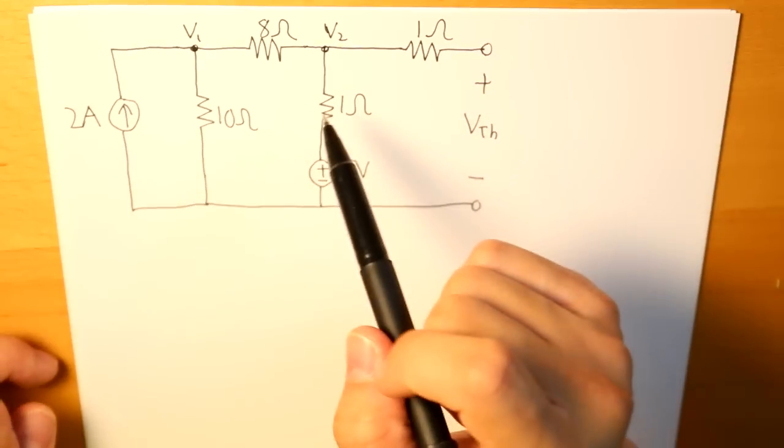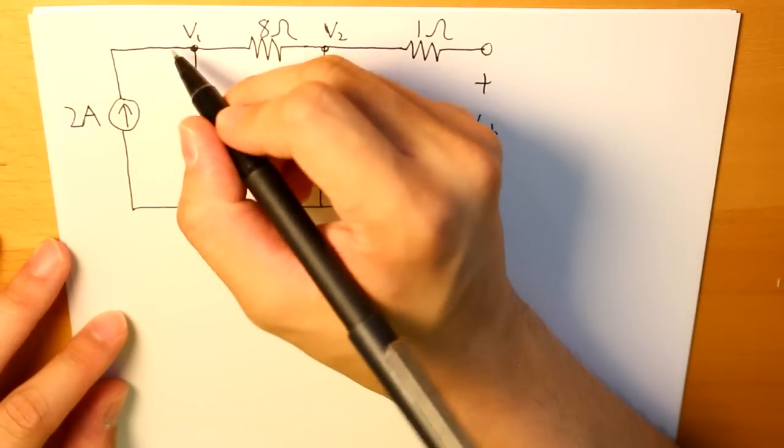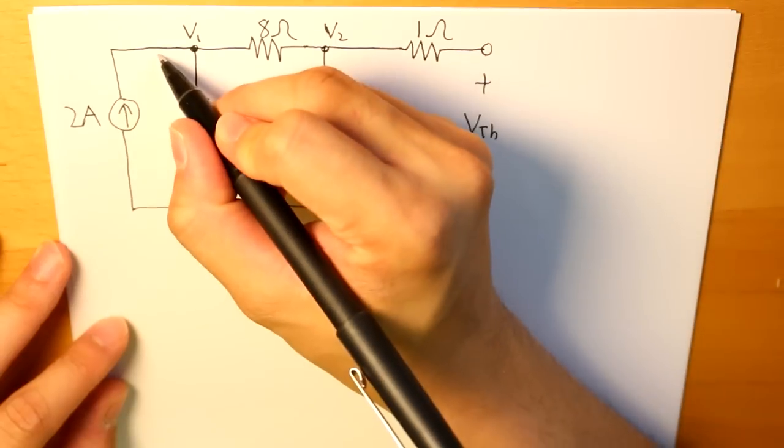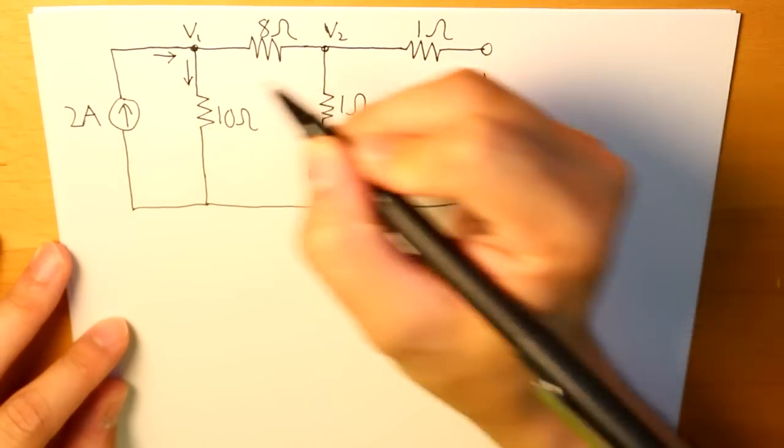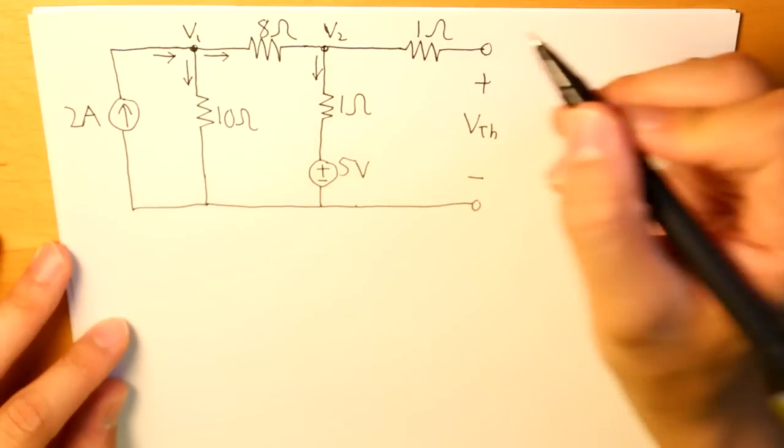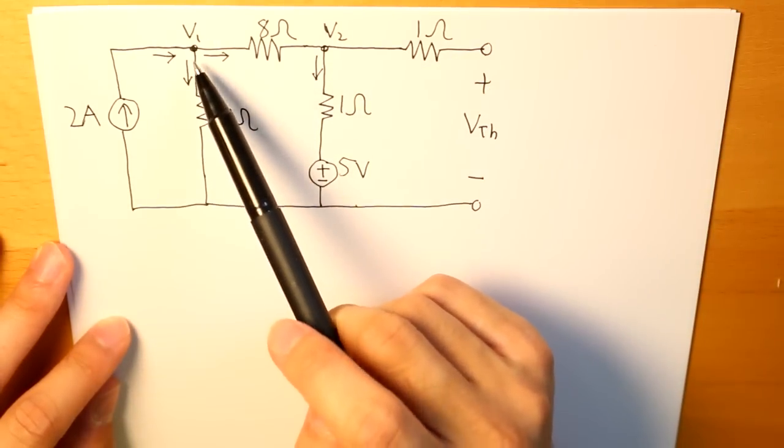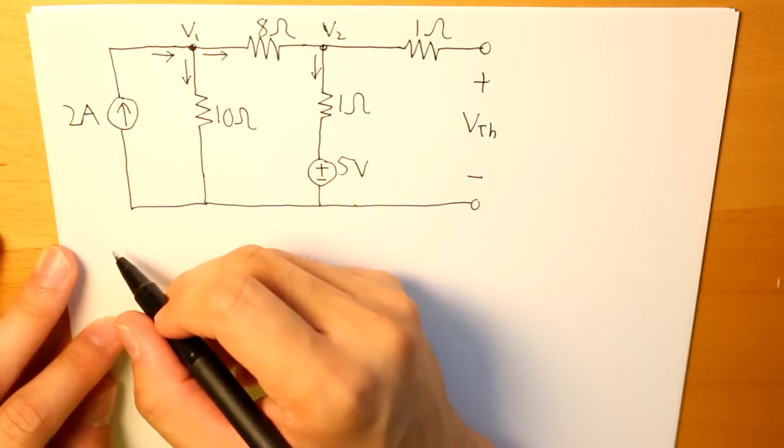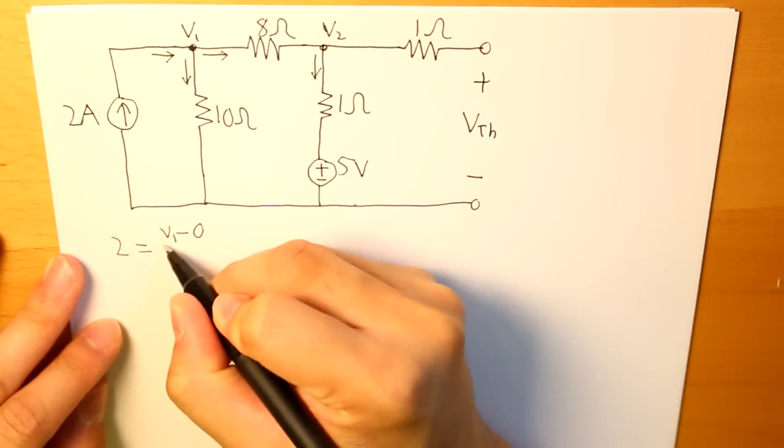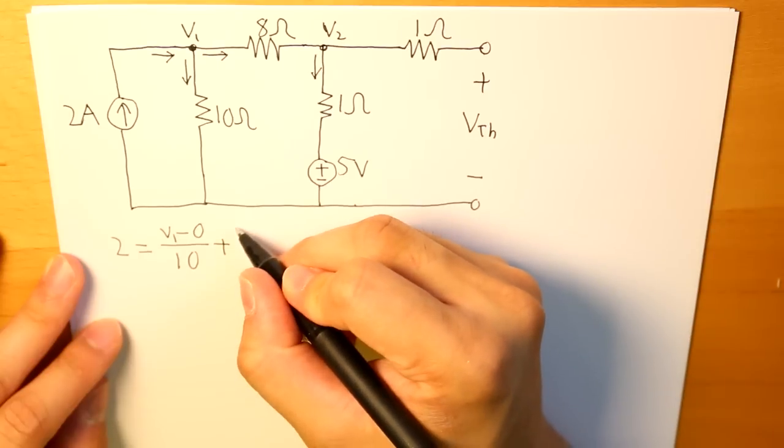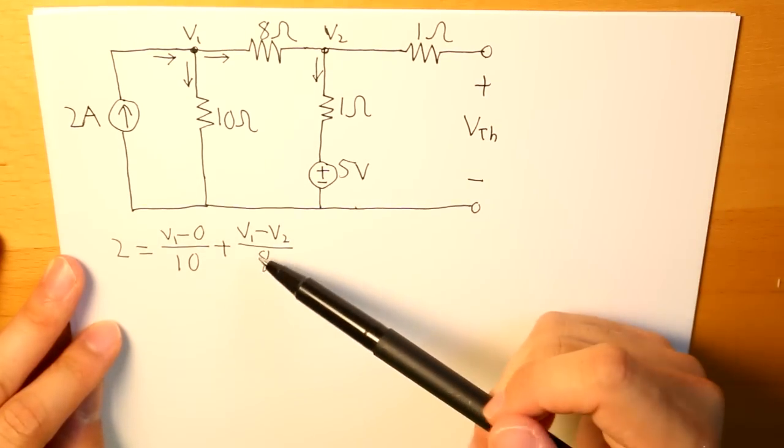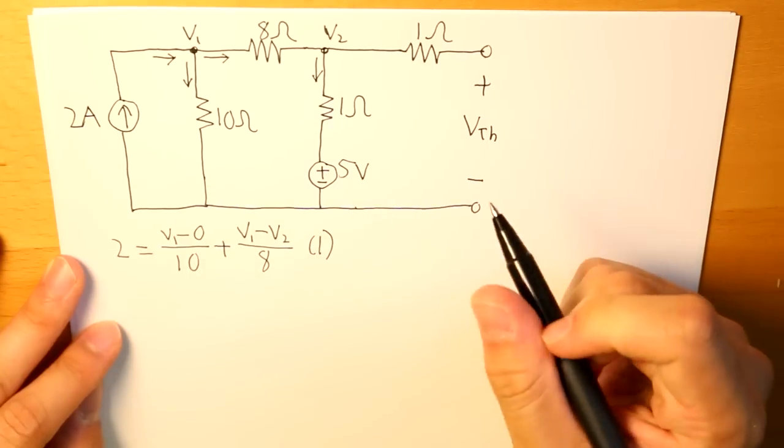Now let's apply KCL to all of these node voltages. Let's just label all the currents that are flowing in and out of each node voltage. So for V1, we have current going in like this, current going out like this, current going from V1 to V2, this current flowing out of V2, and that's it. So let's apply KCL for V1. So V1 is going to be 2 equals to V1 minus 0 divided by 10 plus V1 minus V2 divided by 8. And that's our KCL equation for V1. So we'll label this as equation 1.